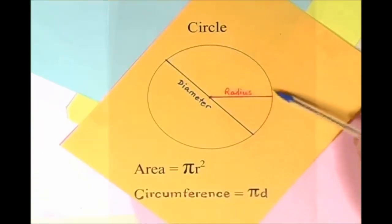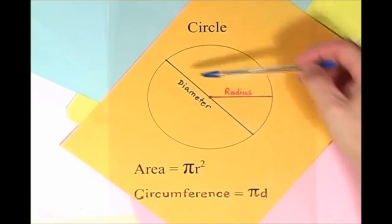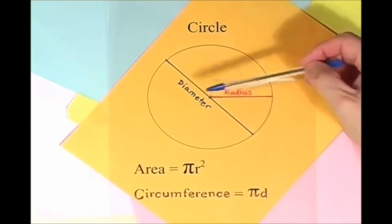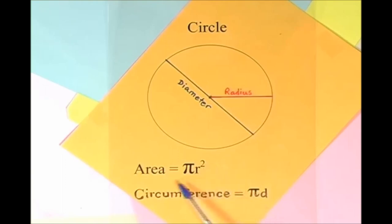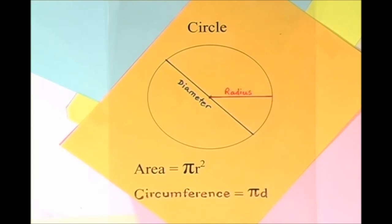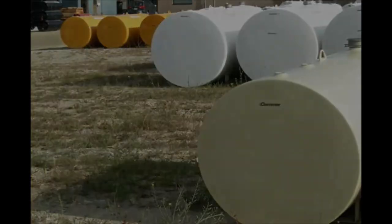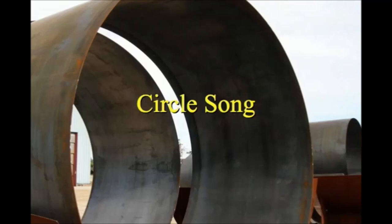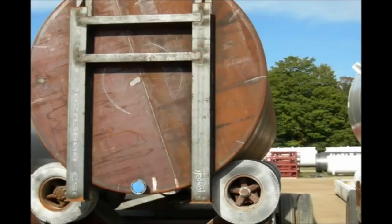Here is a circle, it knows how to get around. It has a radius from center to rim. And its diameter's a line that goes from side to side while passing through the center, now isn't that simple. Pi r squared sounds like area to me, when I need a circumference, I'll just use pi d. Pi r squared sounds like area to me. Here is a circle.